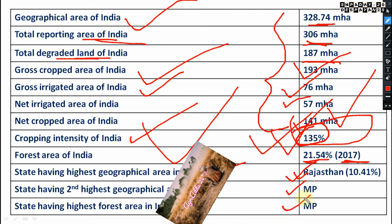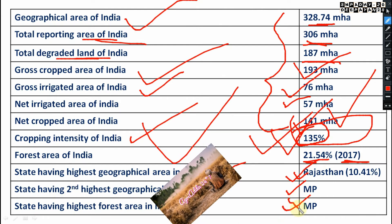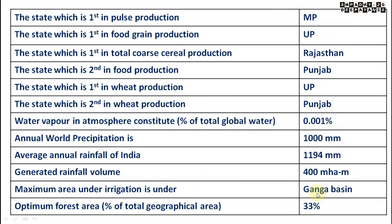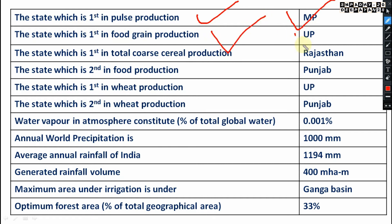The state having the highest forest area is also Madhya Pradesh. Coming to pulse production, the state which is first is again Madhya Pradesh — you can see many records belong to Madhya Pradesh. The state which is first in food grain and cereal grain production is Uttar Pradesh.